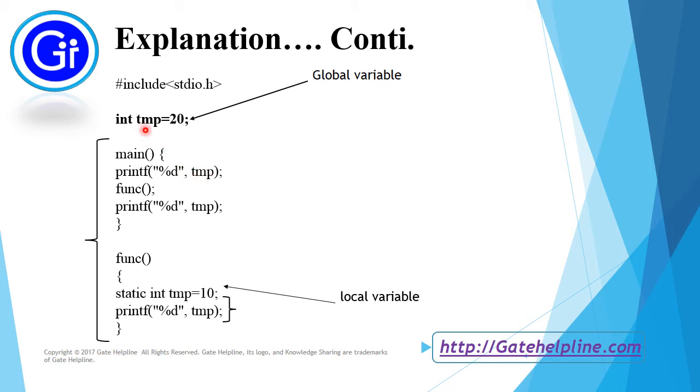So it will check for the global variable or anything which this temp can find within its scope. So this temp will find the value of temp as 20 so it will print 20.